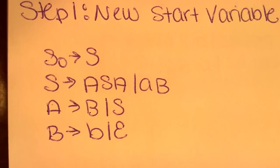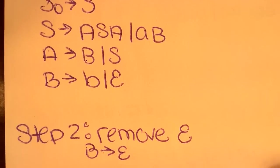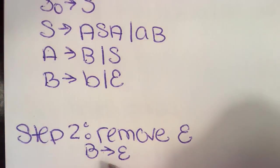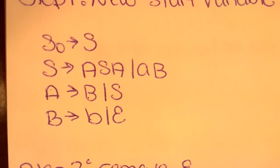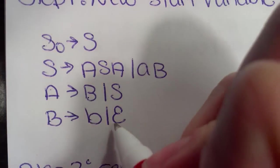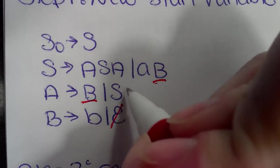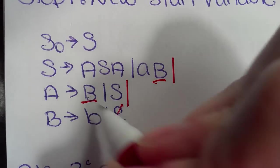Step two is we have to remove our epsilons. To do so, we have to first look at B points to epsilon. So as you can see up here, here is our epsilon. We're going to cross it off and then we're going to find each instance of B and replace it as if it were epsilon. So since A points to B and B could be lowercase b or epsilon, we have to add an epsilon in here to take care of that.